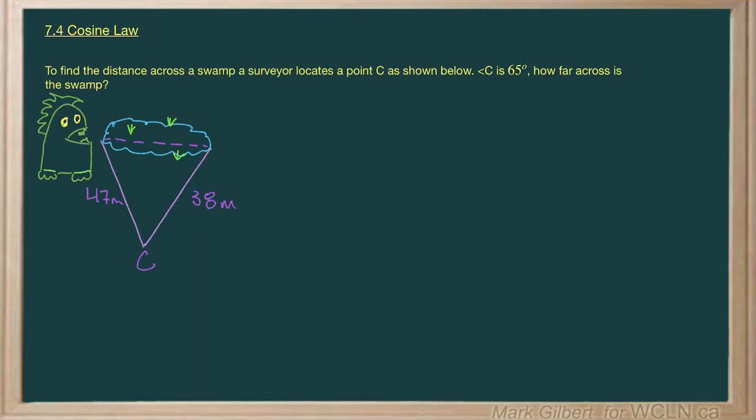To find the distance across a swamp, a surveyor locates a point C as shown below. Alright, I see where the point C is, and angle C is 65 degrees. How far across is the swamp?